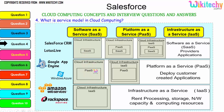For platform as a service, the OS is given and placed in your server — you can put any application or software you want. For infrastructure as a service, the server is given to you, whatever OS you want you can put in, and whatever application you want you can put. Examples for SaaS are Lotus Live and Salesforce CRM; for PaaS it's Windows Azure and Google App Engine; for IaaS you have Amazon Web Services and Rackspace Hosting.